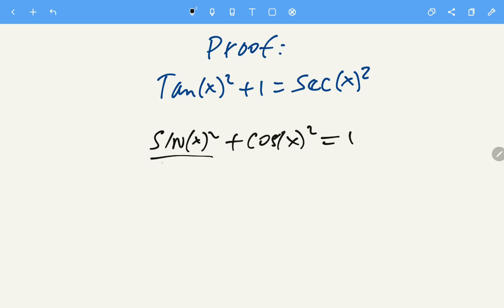So sin(x)² over cos(x)² plus cos(x)² over cos(x)² and 1 over cos(x)².